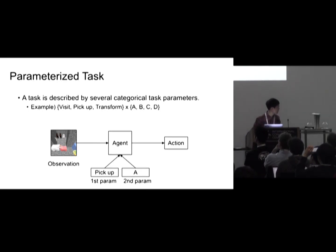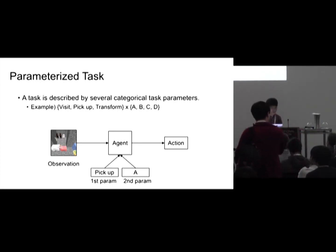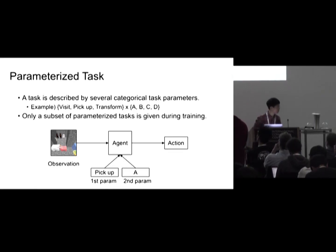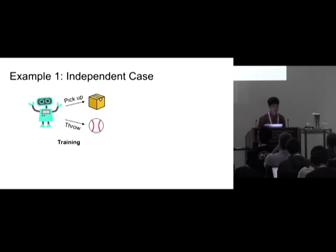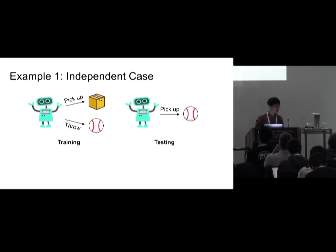the first parameter is 'pick up' and the second parameter is 'A', and the agent has to pick up object A in order to finish this task. The important thing is that only a subset of parameterized tasks is available to the agent during training, and the agent has to deal with unseen combinations during evaluation. This is one simple generalization scenario where the agent is trained on two tasks — pick up box and throw a ball — and we give unseen combinations like 'pick up ball' during evaluation.